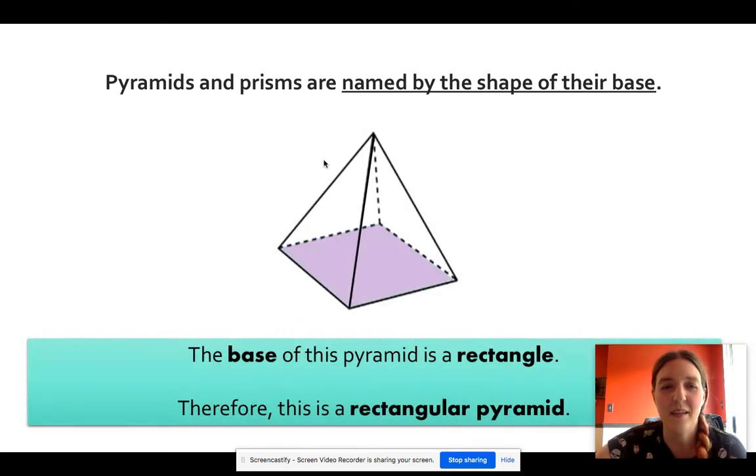This one is also a pyramid because it has the point at the top. So we know it's a pyramid and we're going to call it a rectangular pyramid. You could probably also call it a square pyramid because we don't have a ruler to measure the sides. But its base is a rectangle or a square, depending on how you're looking at it. And that's what gives it its name. So in this case, they've called it a rectangular pyramid.